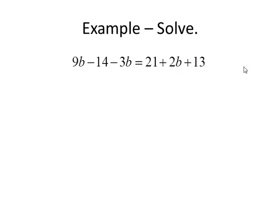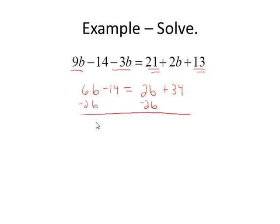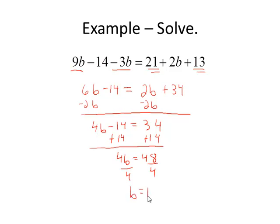In this example, notice we have a lot more terms. If you have more than four terms, you know that you're going to have to combine some like terms before you can proceed. On the left side, I have 9b and negative 3b to combine. On the right, I have 21 and 13 to combine. 9b minus 3b is 6b minus 14. On the right-hand side, I'm going to copy down the 2b, and then 21 plus 13 is plus 34. Get all the variables to the left by subtracting 2b. So I have 4b minus 14 equals 34. Get the constants to the right side by adding 14 on both sides. And finish by dividing both sides by 4. I'm left with the solution b equals 12.